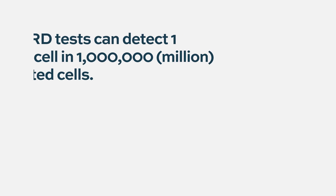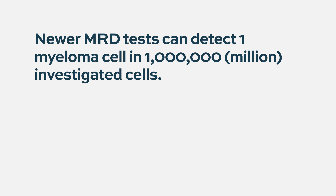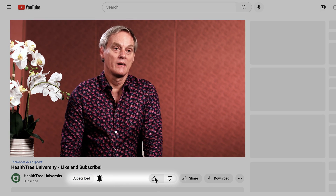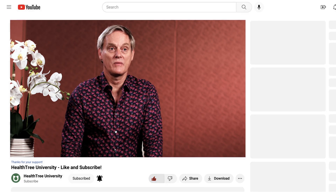There are newer tests with higher sensitivity that can rule out one cell in a million, meaning the patient is 10 to the minus 6 negative. Studies indicate that progression-free survival is longer at 10 to the minus 6 compared to 10 to the minus 5 negative. The standard definition is set at 10 to the minus 5, so anything better than that represents an improvement in clinical outcomes.